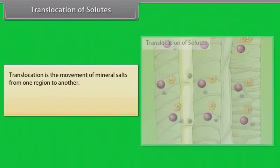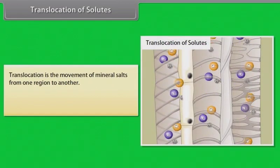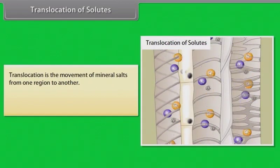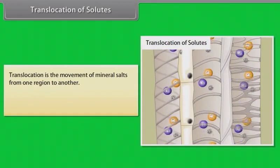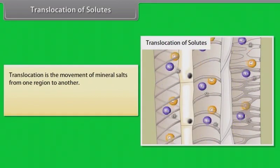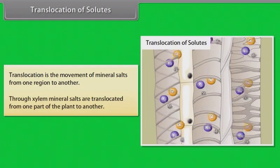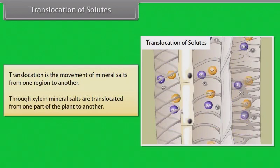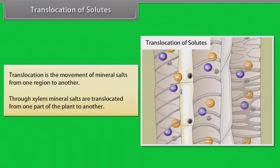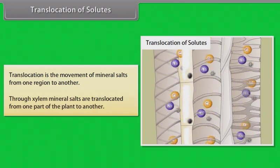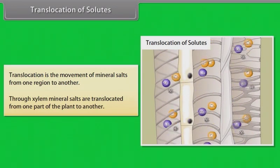Translocation of solutes: translocation is the movement of mineral salts from one region to another. Through the xylem, mineral salts are translocated from one part of the plant to another.